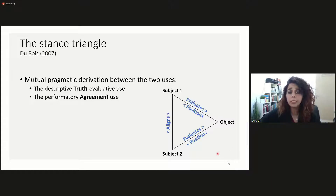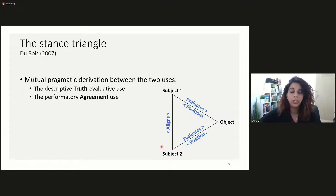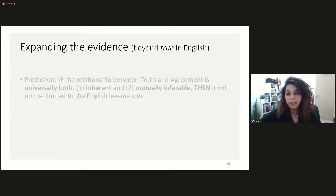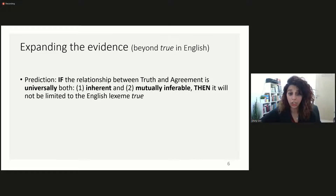Since in principle the stance triangle models interaction regardless of a particular language or particular lexeme, a finding with respect to the English predicate 'true' should potentially also apply to truth predicates in other languages. By expanding the evidence beyond 'true' and beyond English, we would be able to show the universality of the relationship between truth and agreement. If the relationship is universally both inherent and mutually inferable, it will not be limited to the English lexeme 'true'.